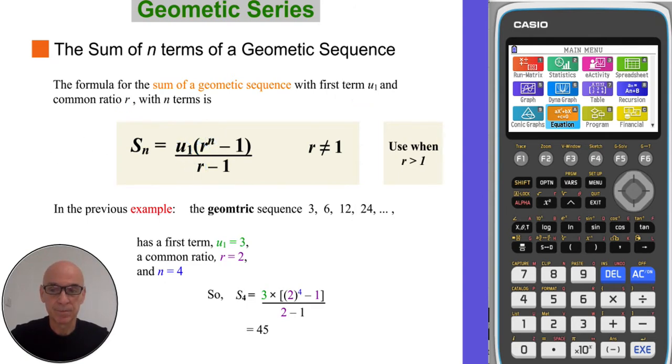So in the example shown here, to find the sum of these first four terms, we identify that the first term u1 is 3, the common ratio r is 2 because we're multiplying by 2 each time, and n is 4 because we're trying to find the sum of these four terms.